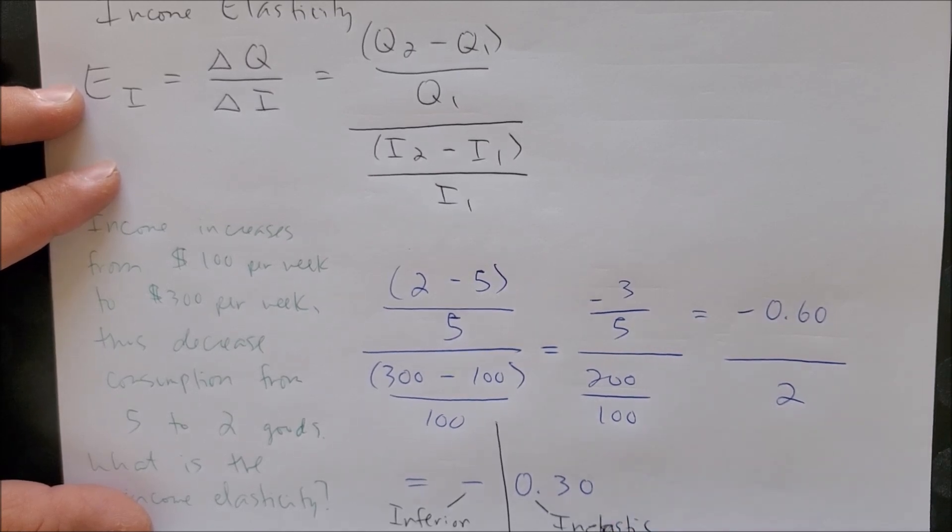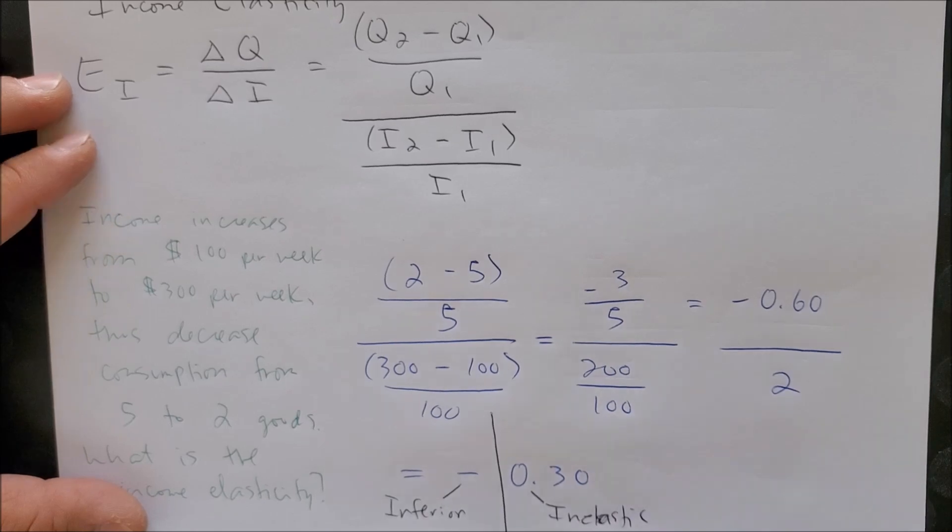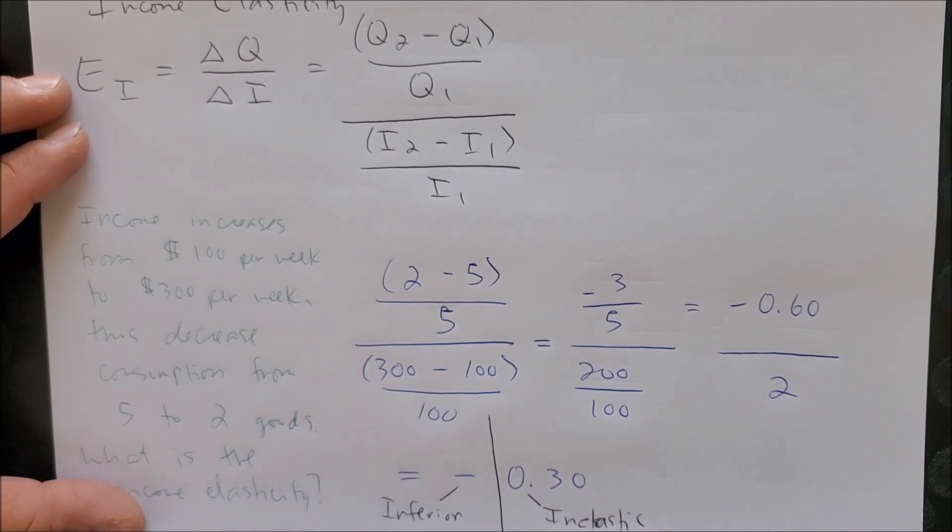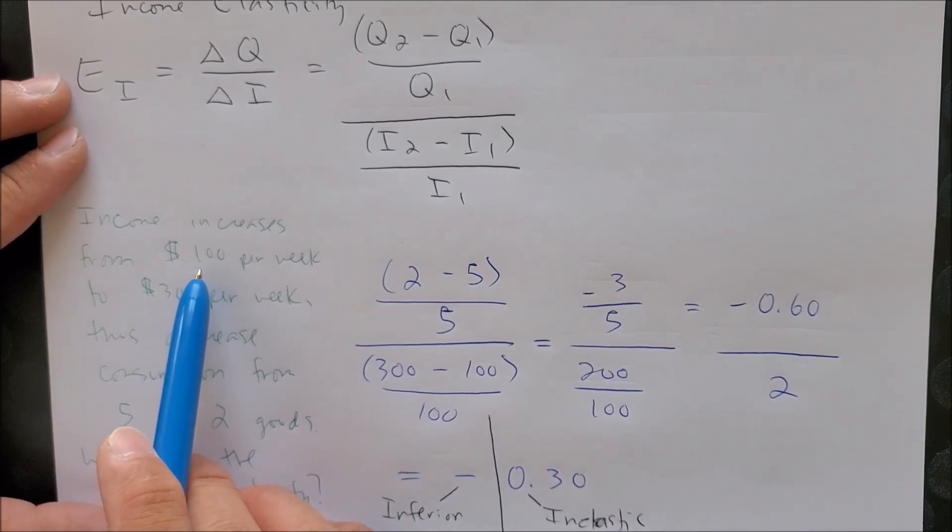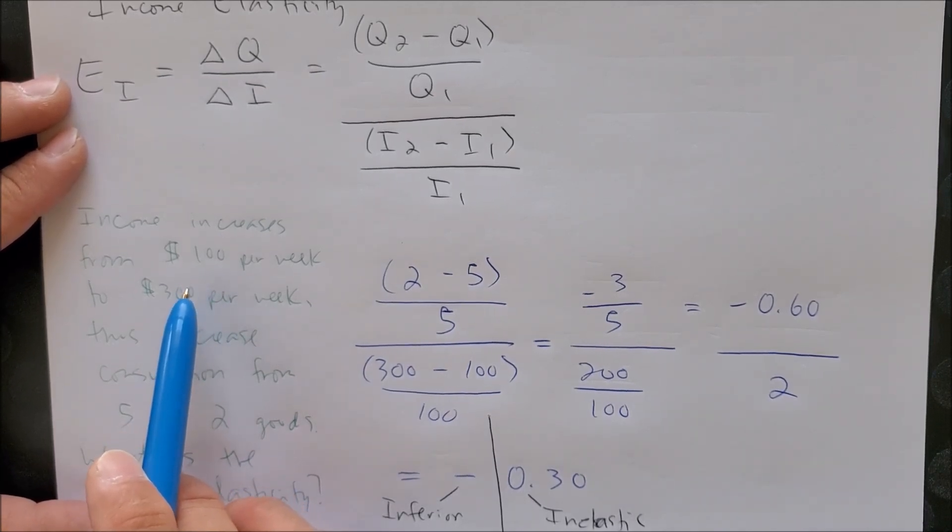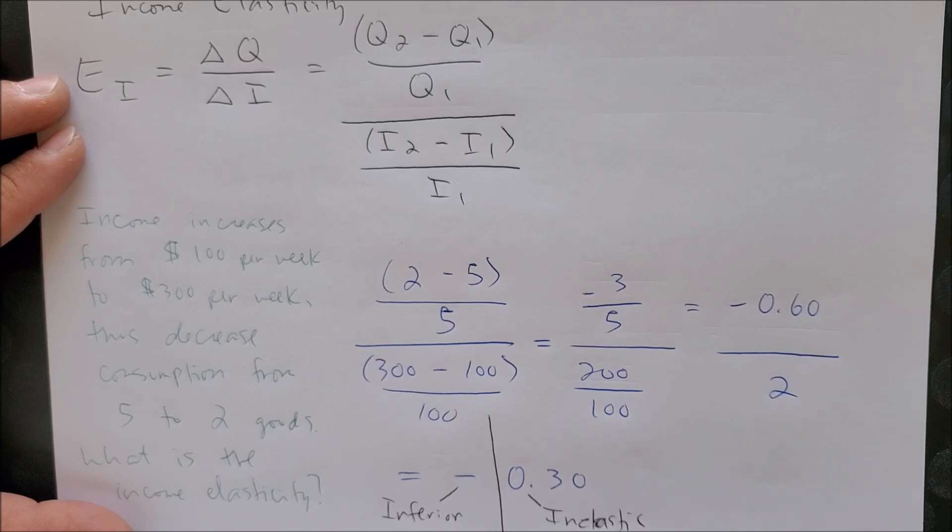So now when we look at what has happened to your income to make some sense into what we have, when your income increases by $200, your response to not consume this good is inelastic—it's slow. So for some odd reason, this inferior good to you has some value.